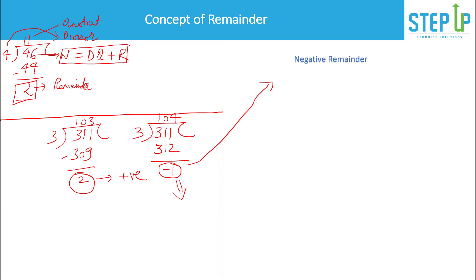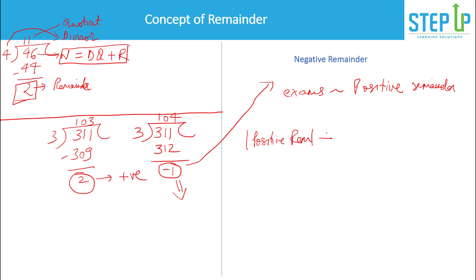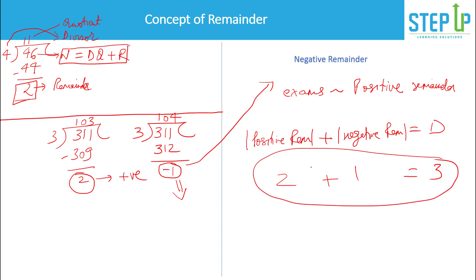So the negative remainder is minus 1. In exams we always deal with a positive remainder, but there's a key property: the modulus of the positive remainder plus the modulus of the negative remainder always equals the divisor. Here our divisor was 3, positive remainder was 2, and the negative remainder modulus is 1. So 2 + 1 = 3. That is the concept of negative remainder.